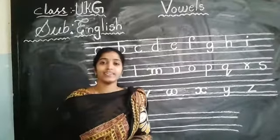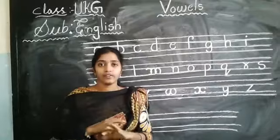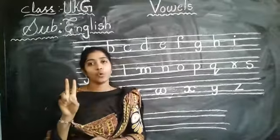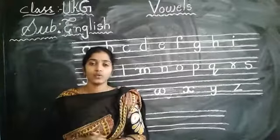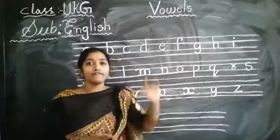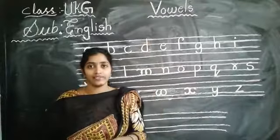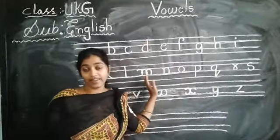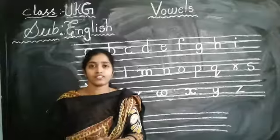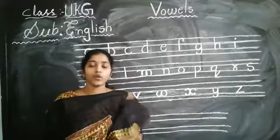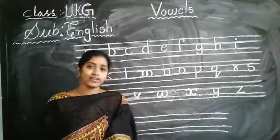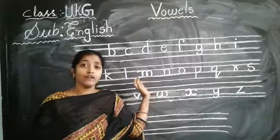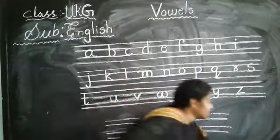So in 26 letters, we have divided them into two parts. What are those? Vowels and consonants. So we have divided these letters into two parts — vowels and consonants. So today we are going to learn vowels. What are vowels?